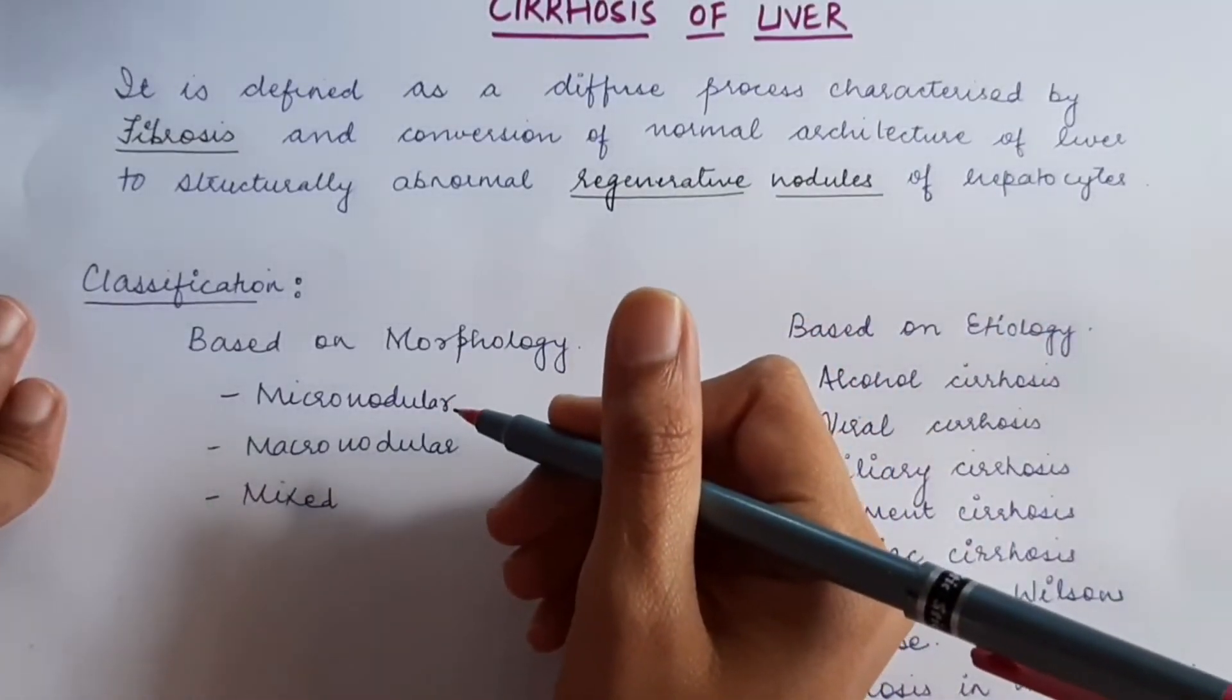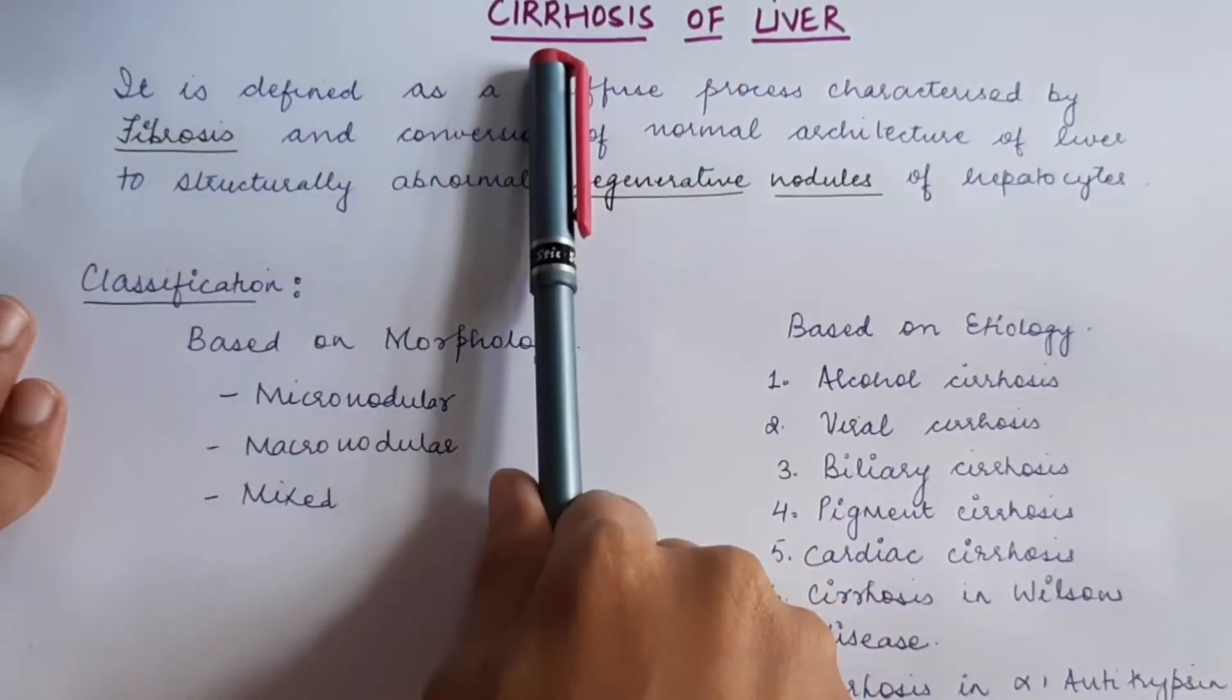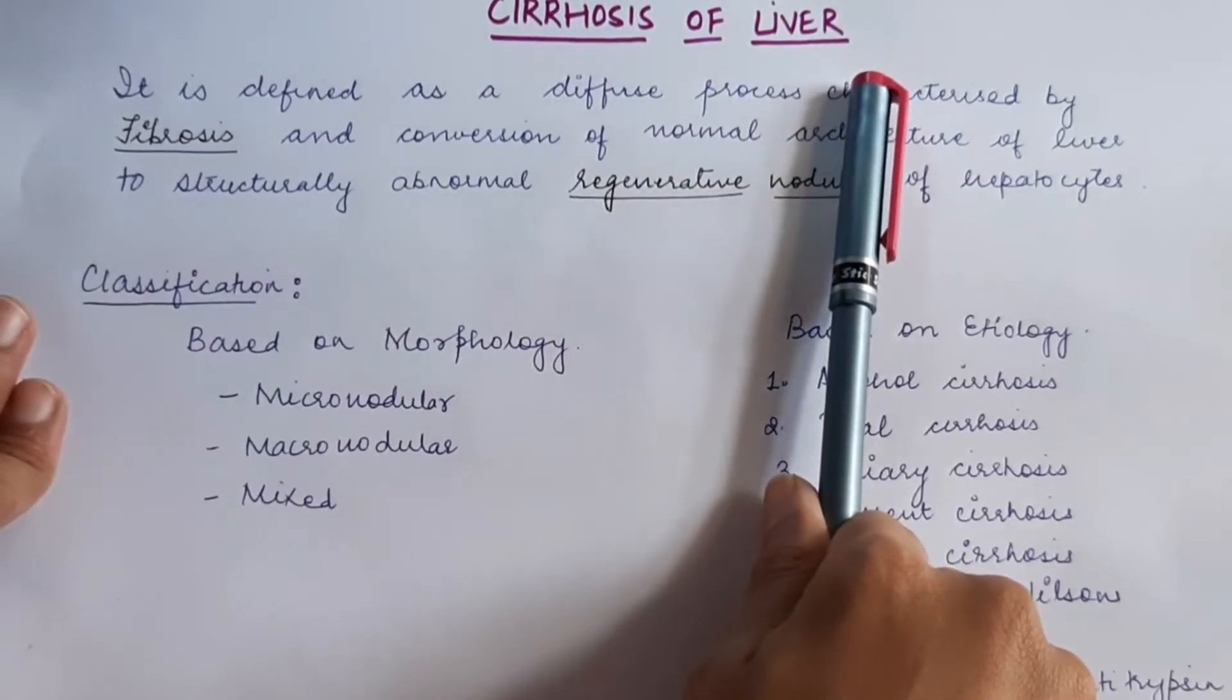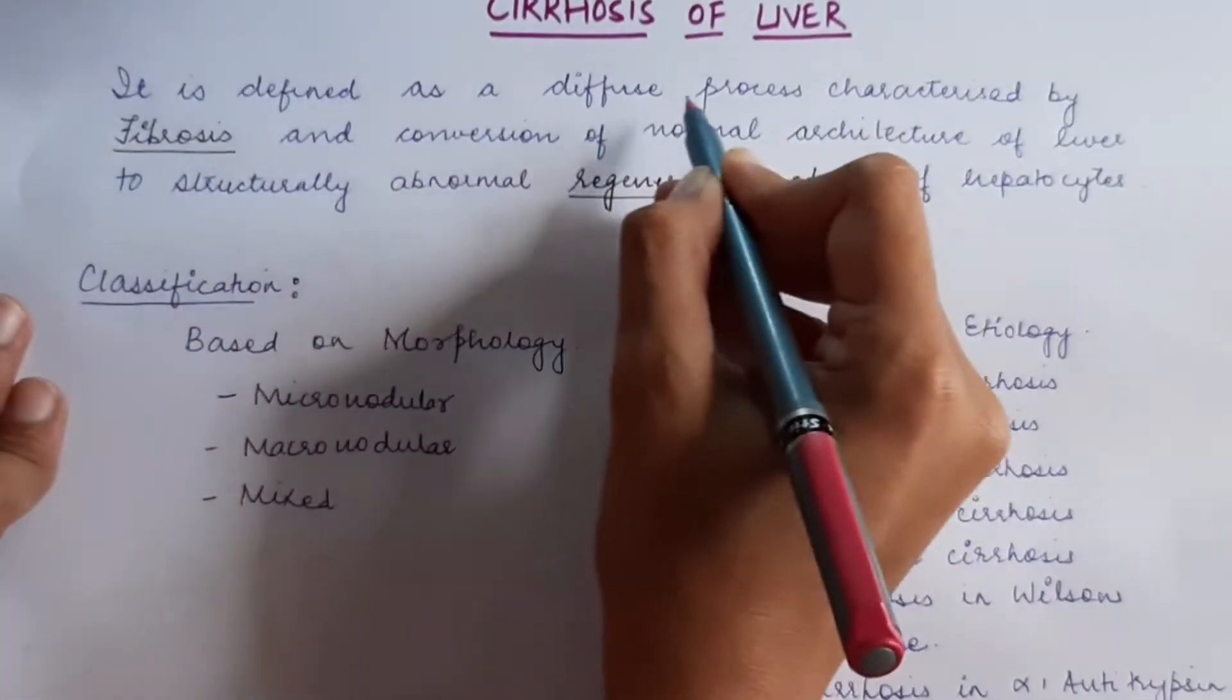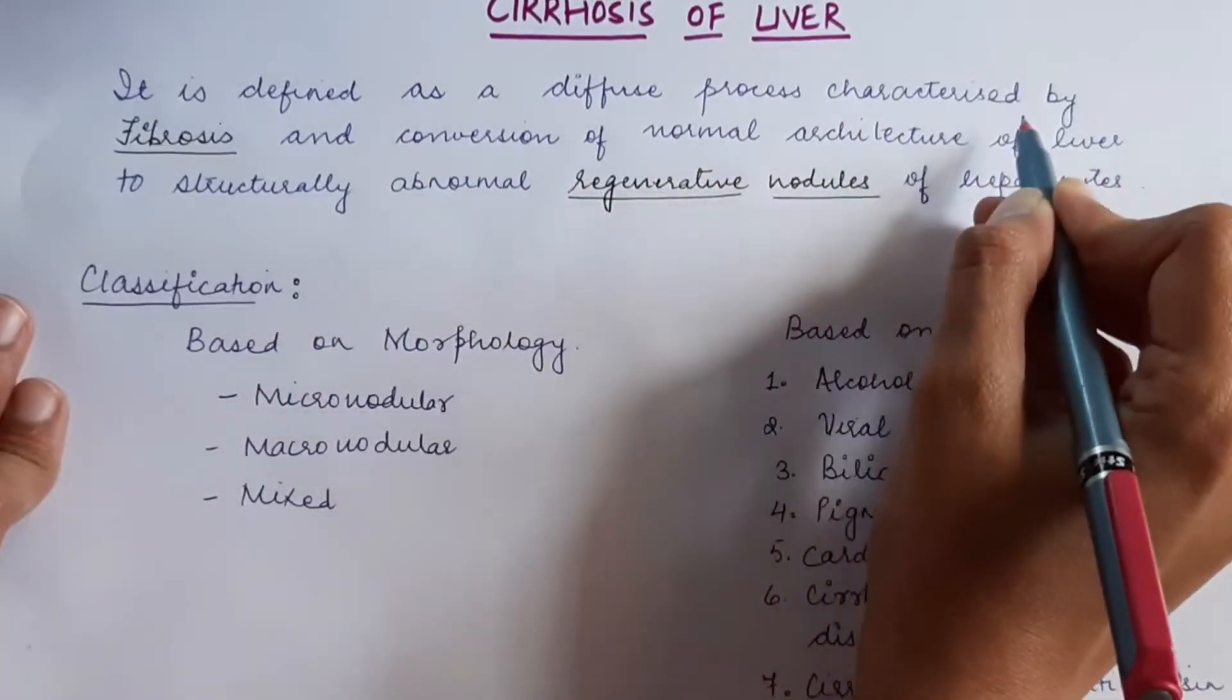Hello everyone, in today's video we will cover the topic of cirrhosis of liver. Now let us look at the definition. It is defined as a diffuse process characterized by